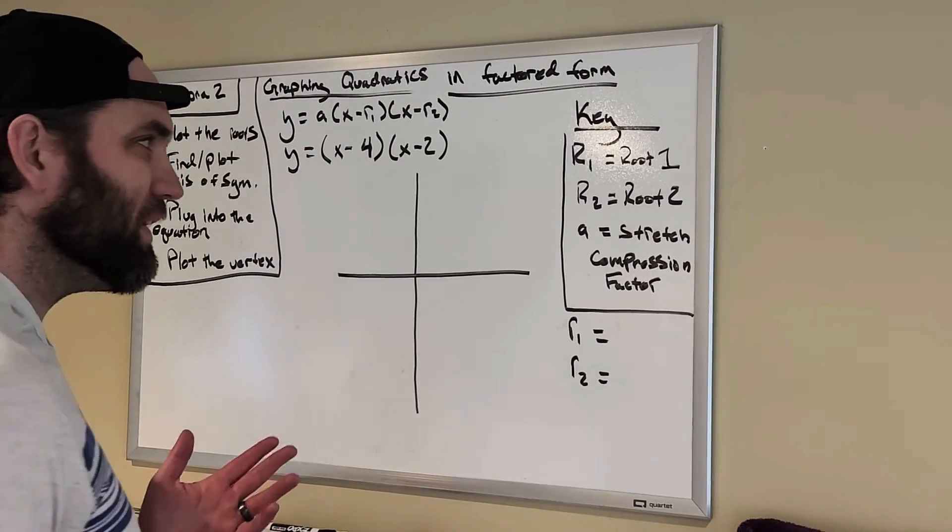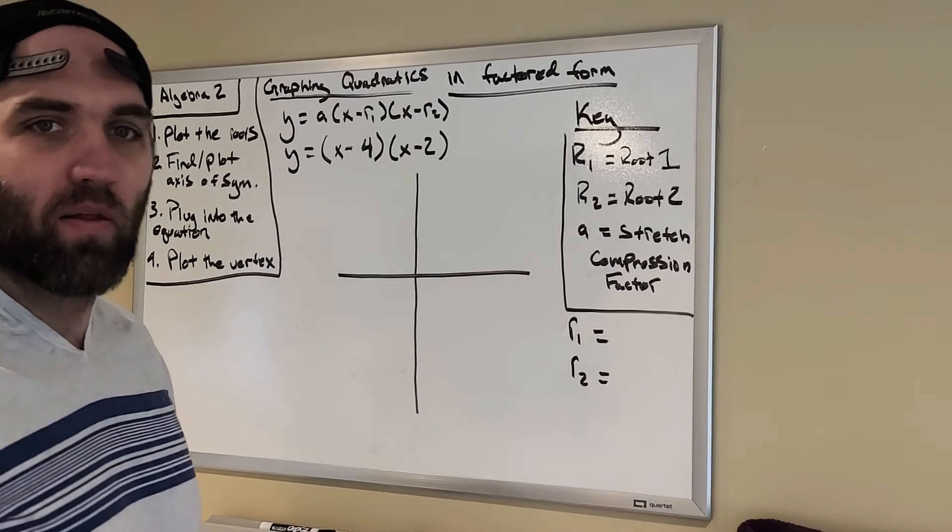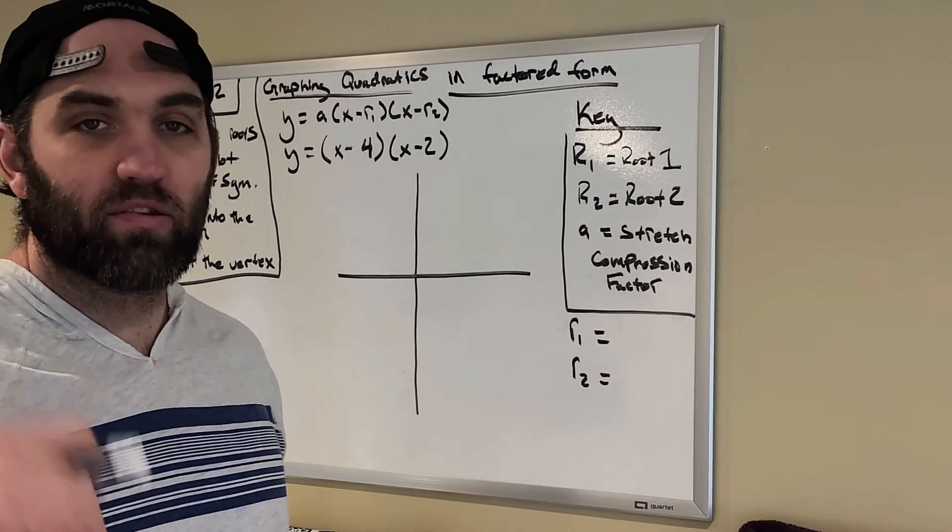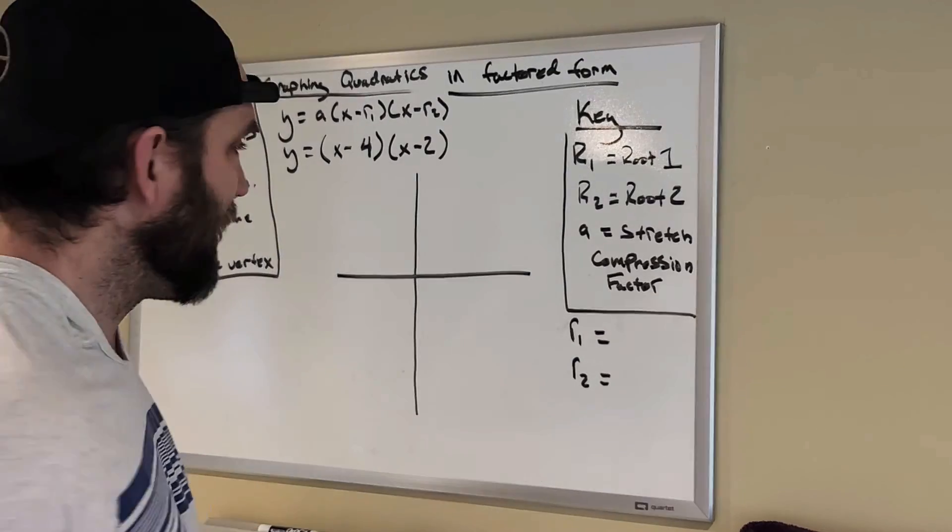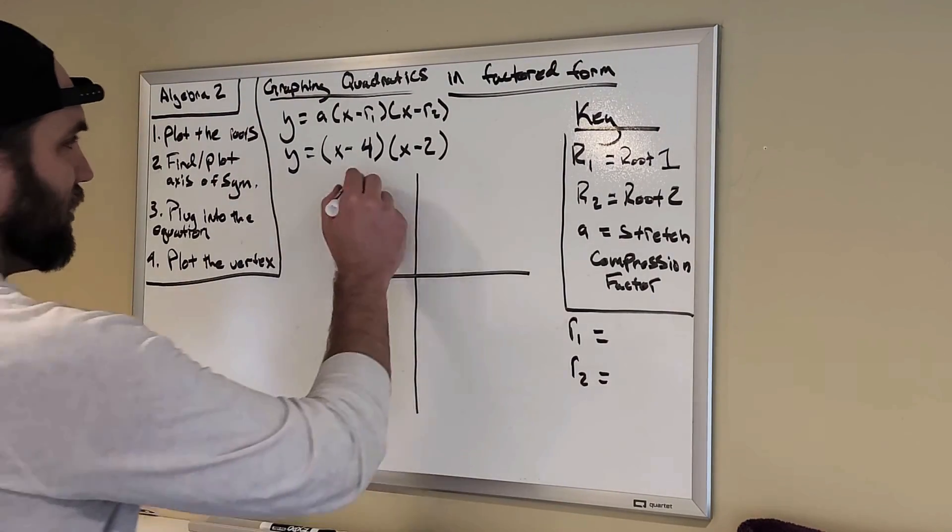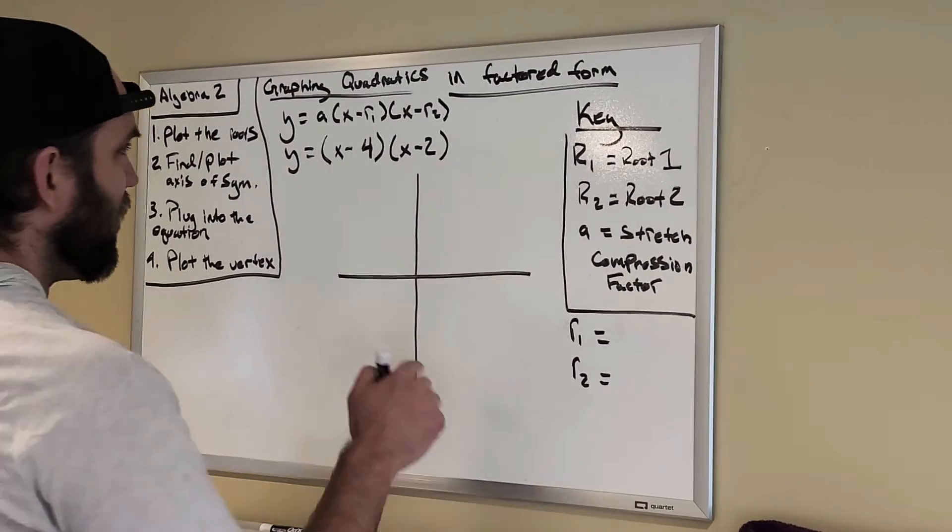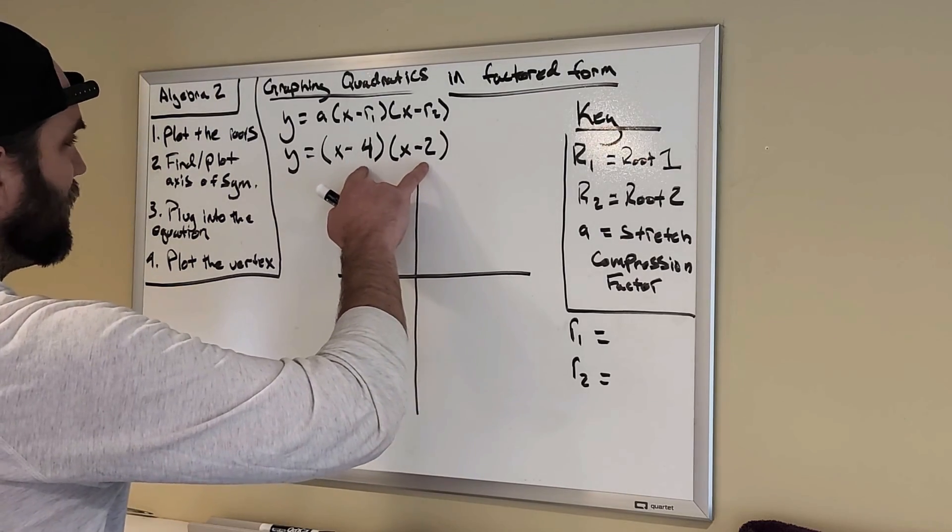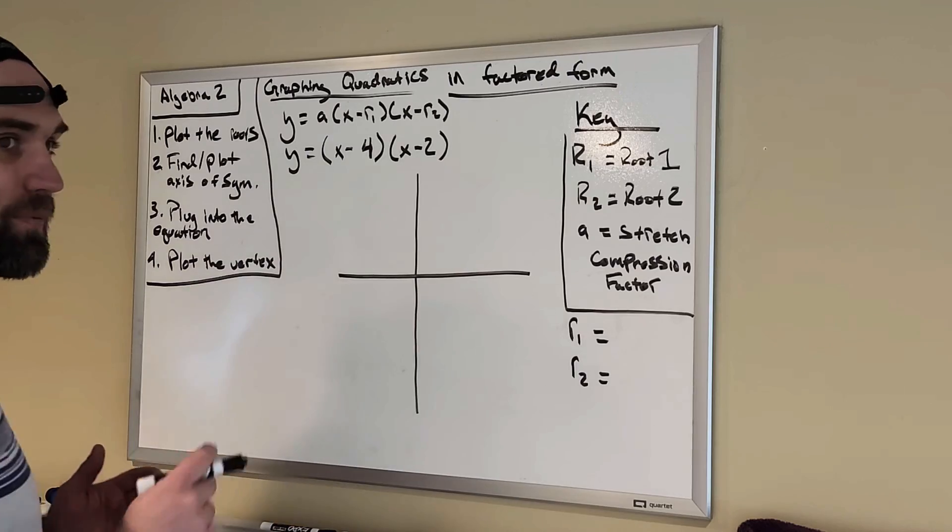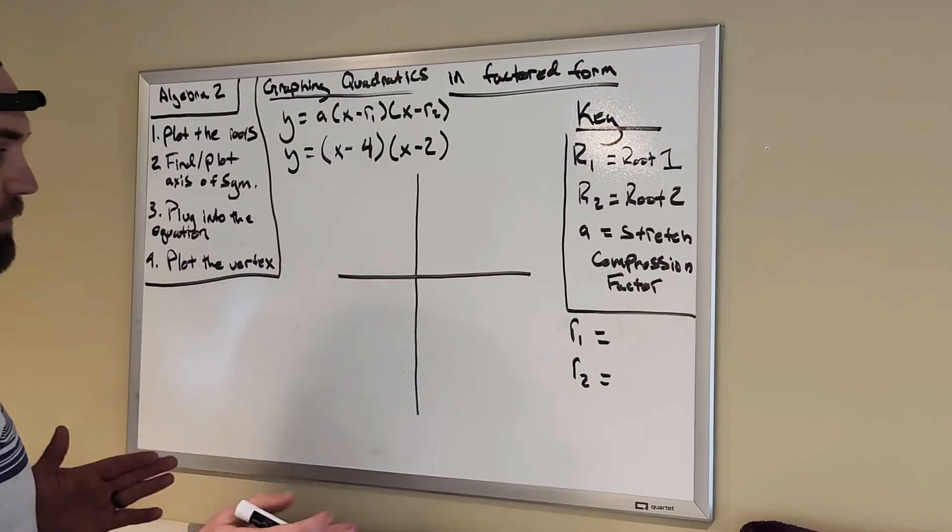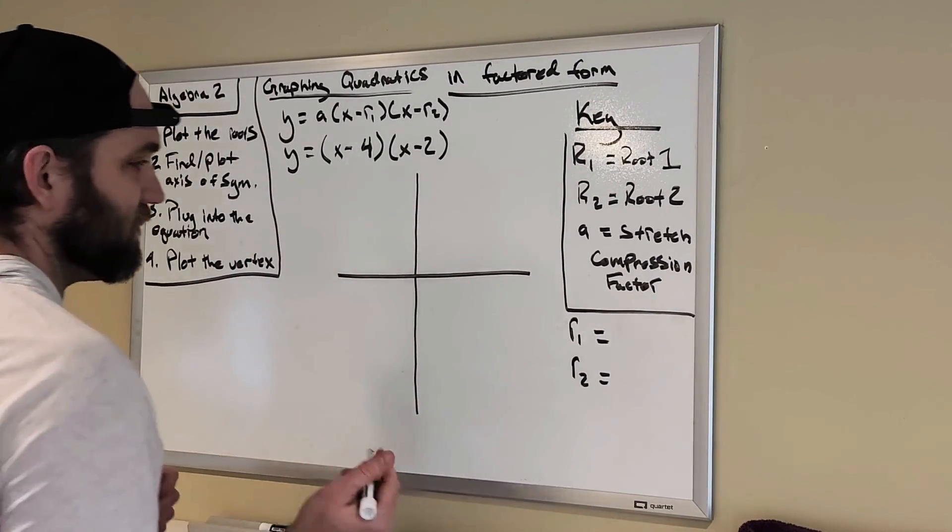And what that means is that's where the parabola is going to cross the x-axis. The roots mean the zeros of the parabola. So, this one, my r1 and my r2, we take what the opposite of the number is inside the parentheses. So, the opposite, we take out the negative sign for this one, we just make it positive.